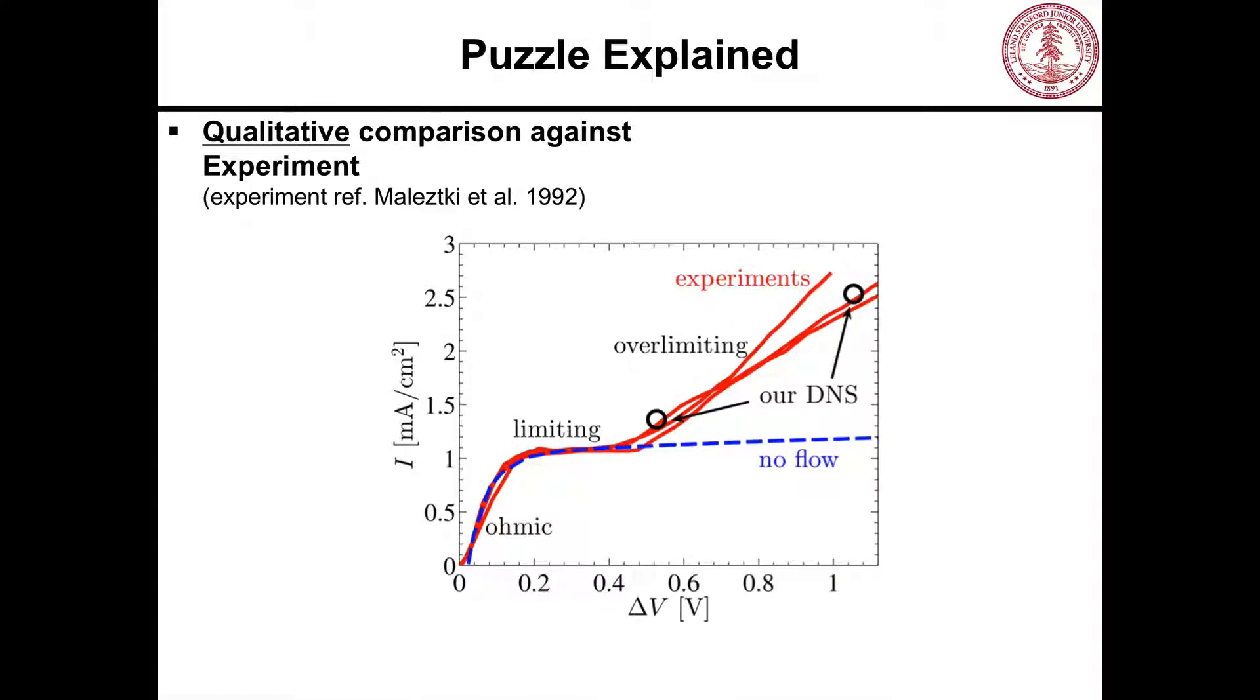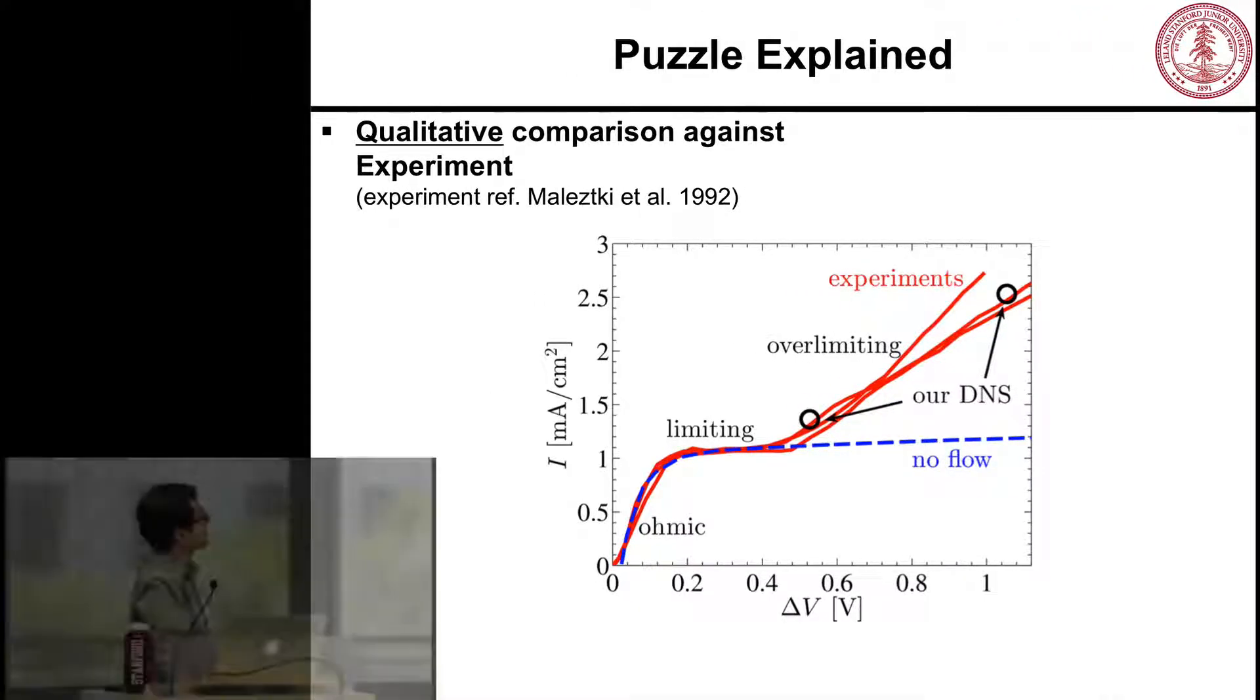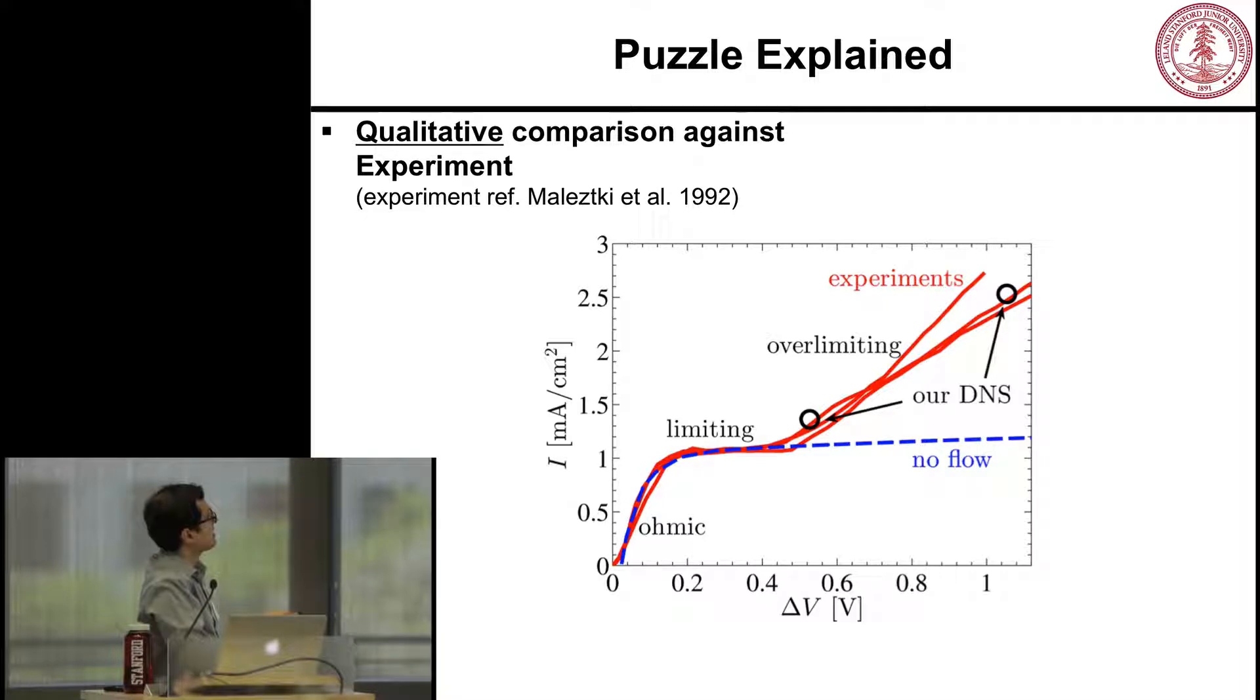And that explains why after you go to higher voltage, you get higher desalination rate. So that explained the puzzle. Now I go to the engineering question again, the diagram. The rate of desalination as a function of voltage, this was the previous theory, and then it turns out when we did our simulations, we showed that actually the data is on top of the experiment. So that explained what is going on.